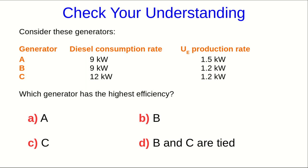Compare these three generators, where you're given a consumption rate of chemical energy in the form of diesel fuel and the rate at which each is producing electric potential energy, and decide which one has the highest efficiency.